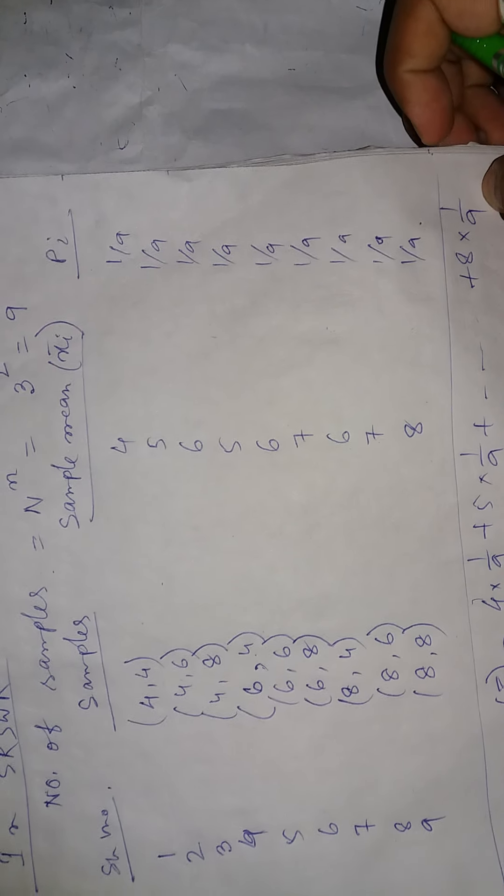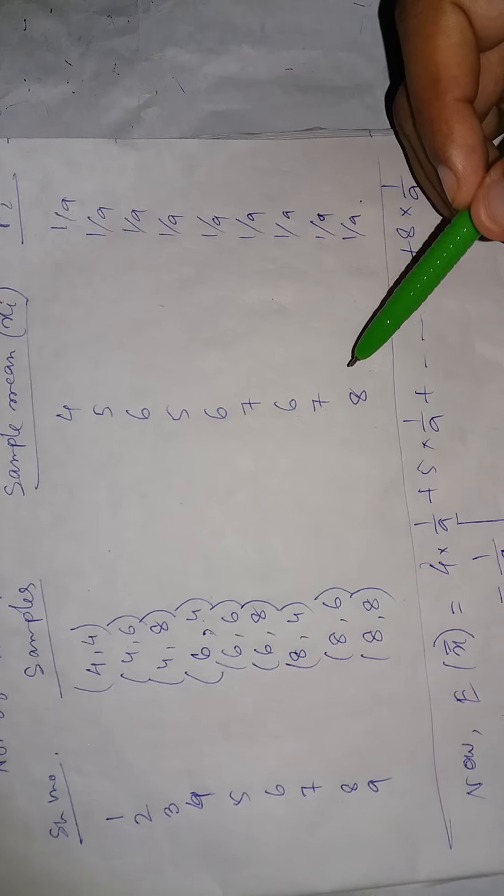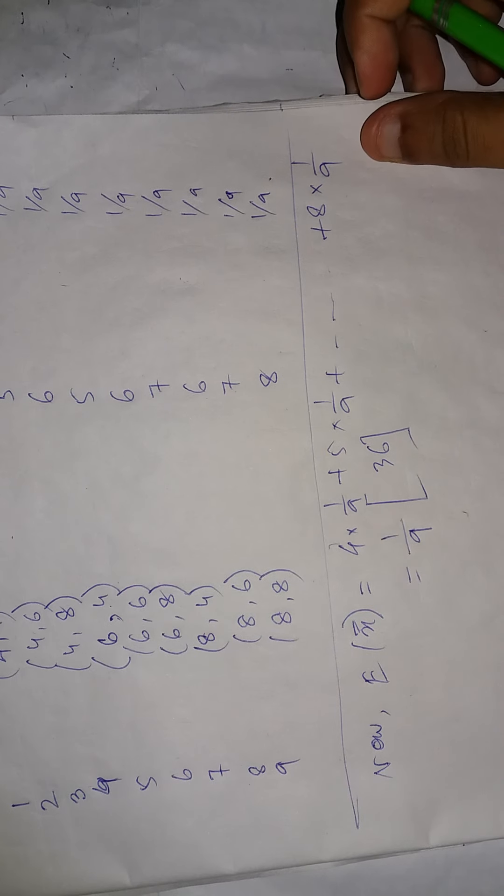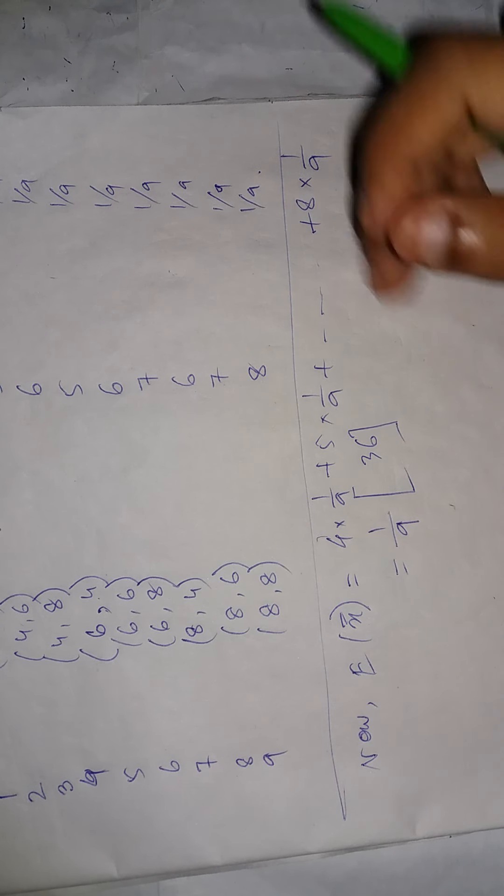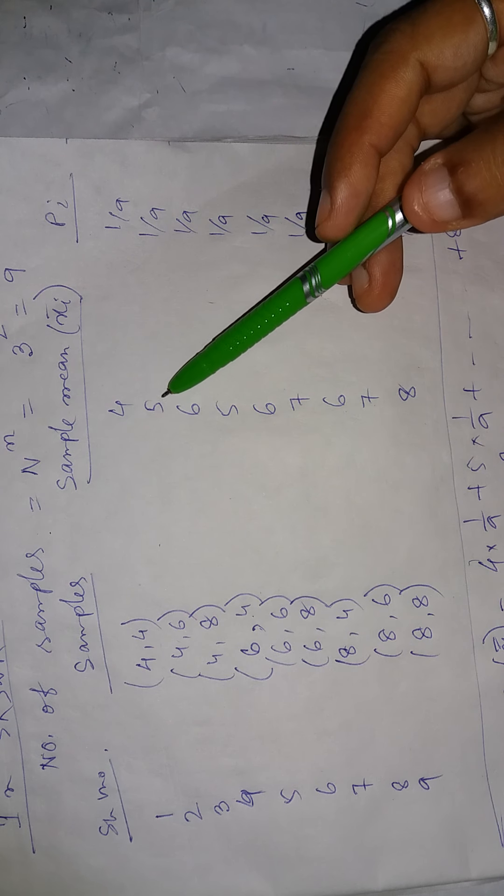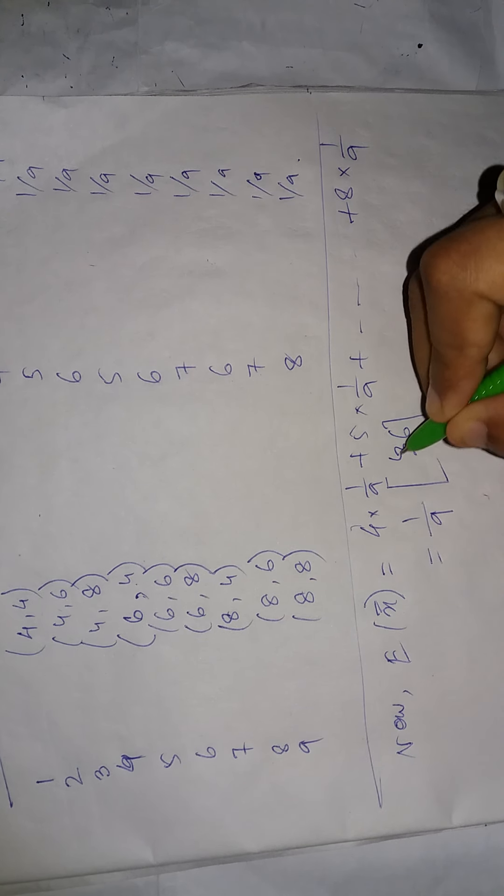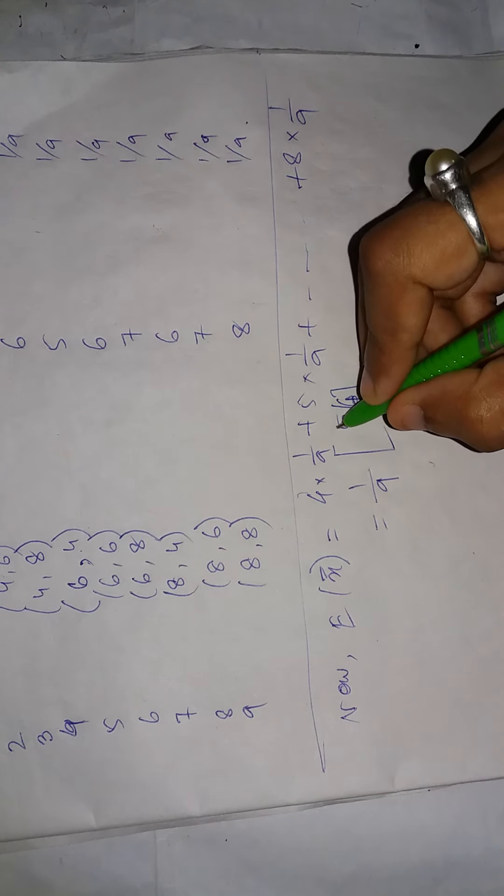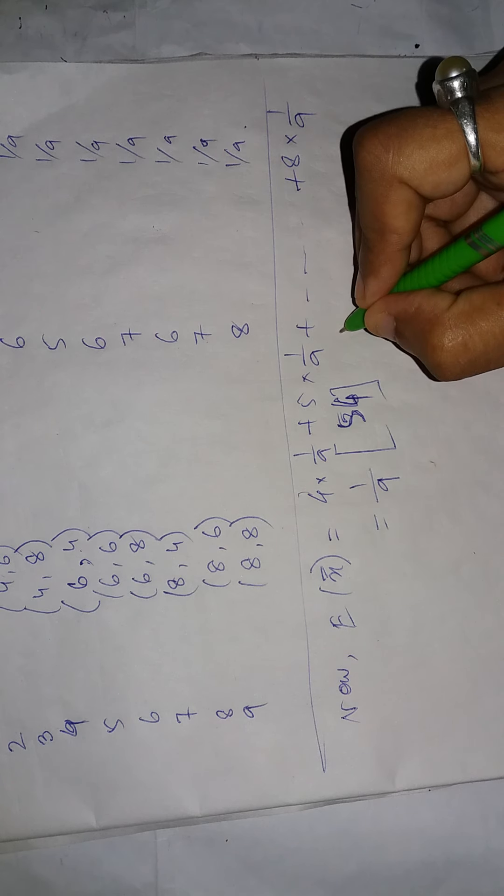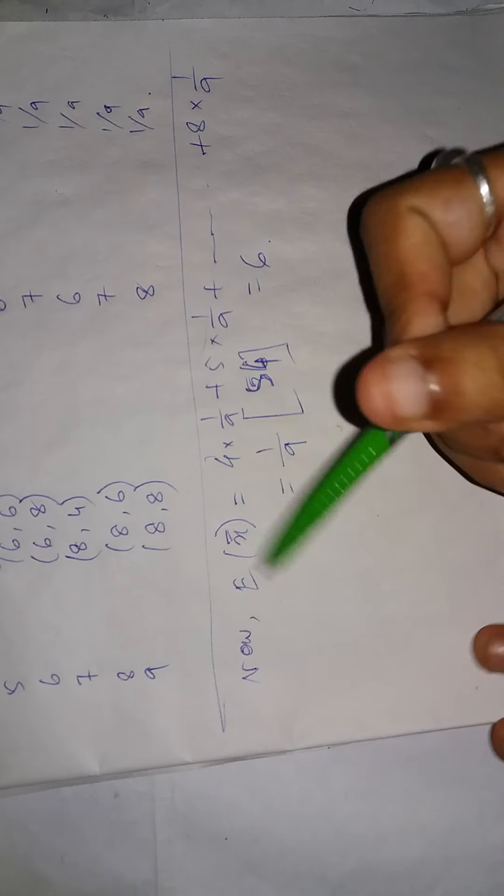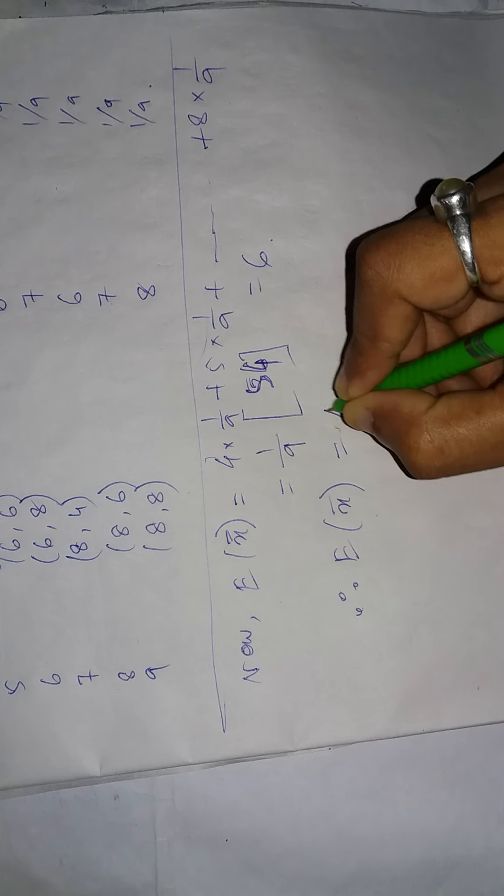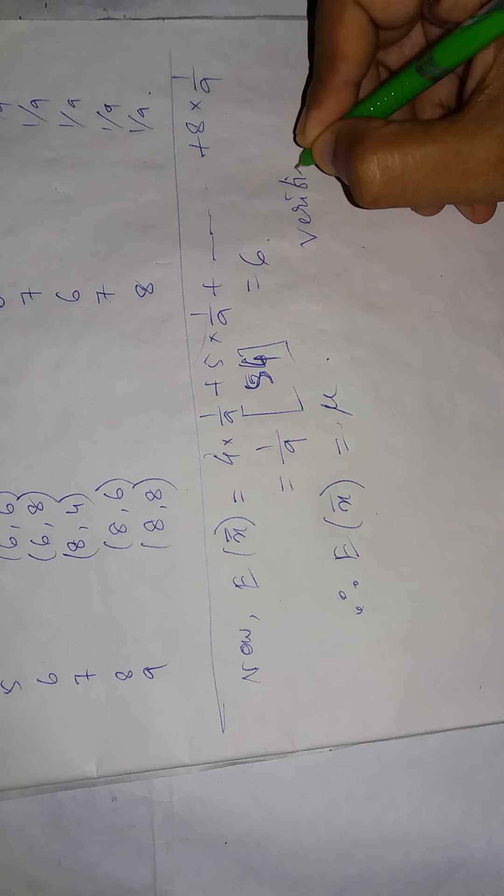Let me do the calculation. 4 plus 5 equals... 5, 6... the sum is 54. 54 divided by 9 equals 6. So the expectation equals 6, which matches the population mean. This verifies the first part.